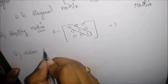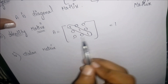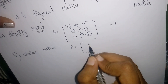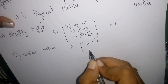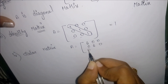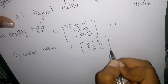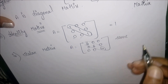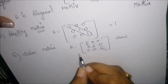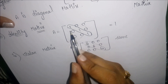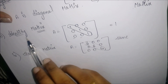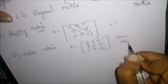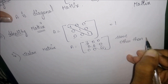The next topic is a scalar matrix. It is also a type of diagonal matrix where all the principal diagonal elements are non-zero and must be equal, but not equal to one — they may be any other value as long as they are all equal. Such a matrix is called a scalar matrix.